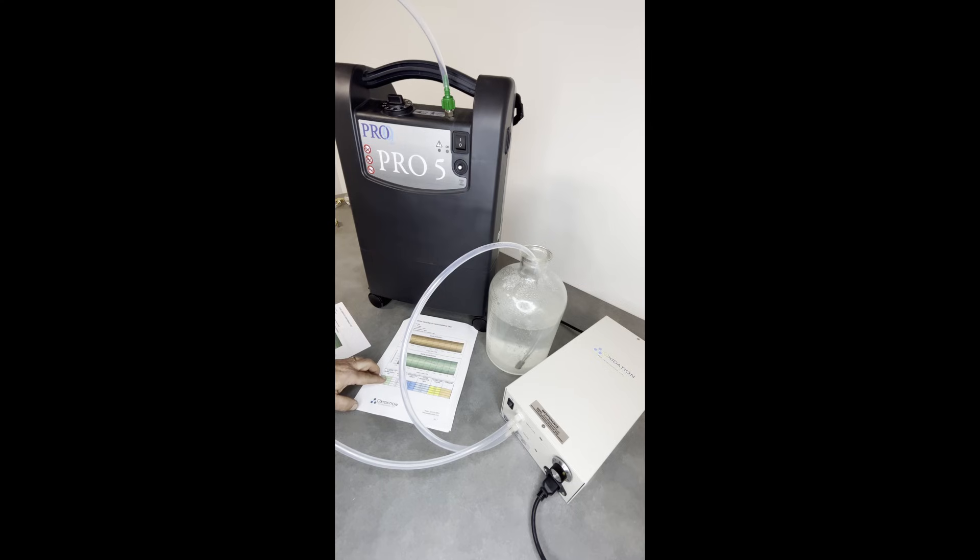At a quarter of a liter a minute, we'll get 34 grams per cubic meter, and a half a liter a minute, concentration goes down. This particular model of the Pro 5 reduces the flow down to 0.125, and we don't have that on here, but at 0.125, then you're getting around 50 grams per cubic meter.